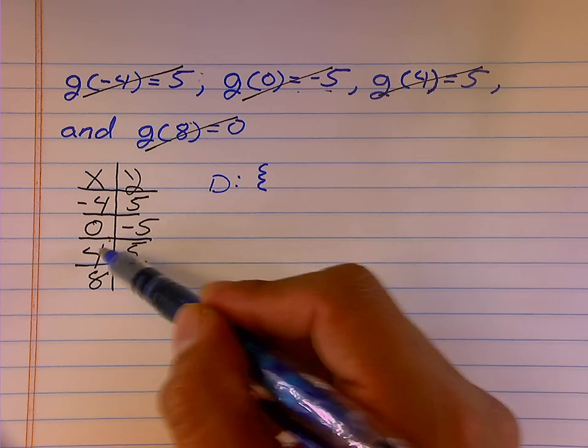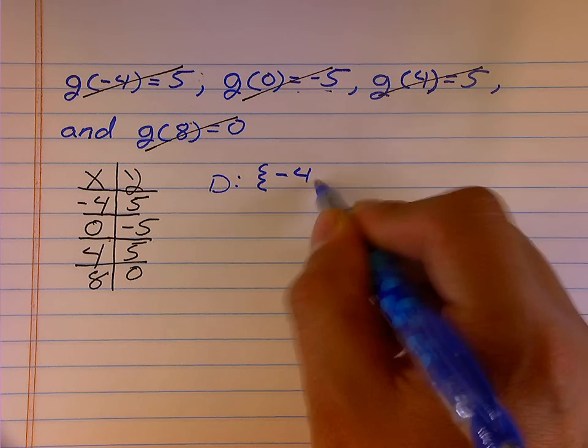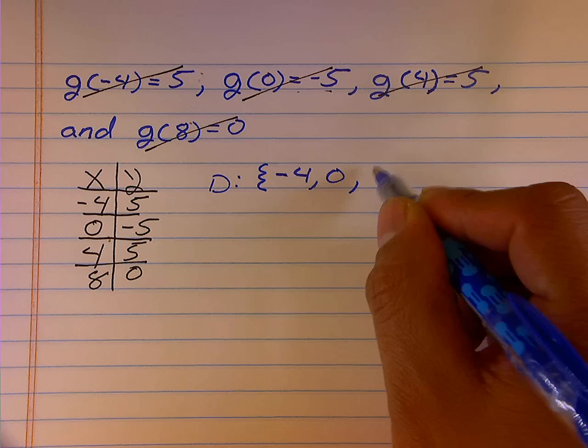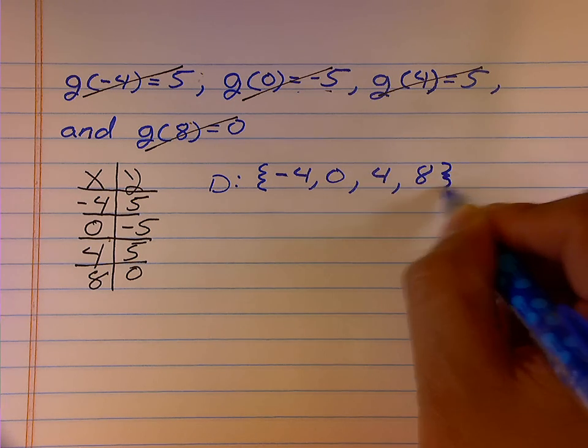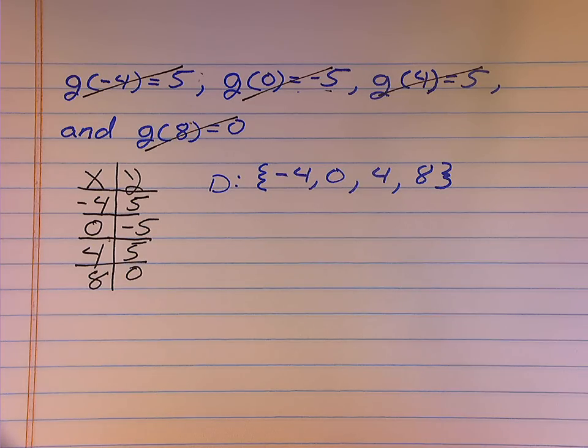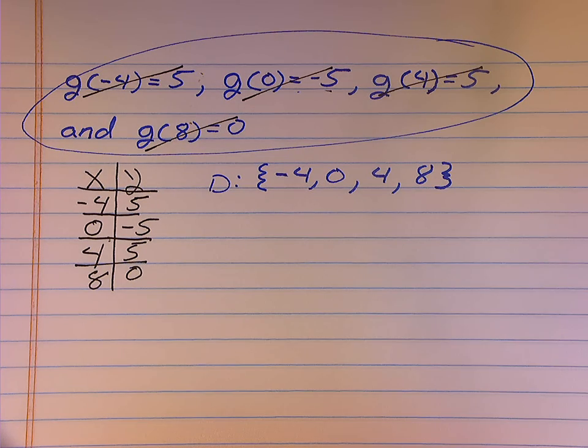There's only 1, 2, 3, 4 possible x values. I'll list each one: either negative 4, 0, positive 4, or positive 8. That is the domain of the original values given in function notation.